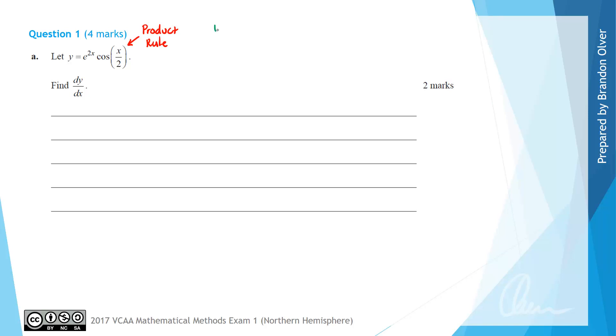To apply the product rule, we start by letting u be the first function that's multiplied, so that's e^(2x), and v is the next function that's multiplied, which is cos(x/2).